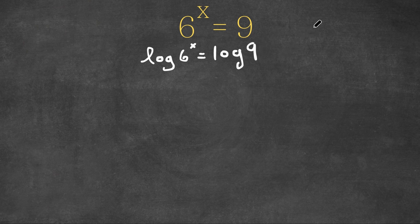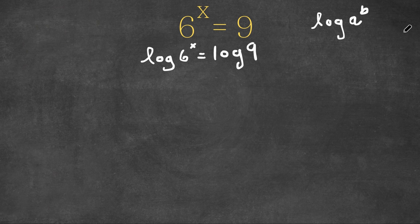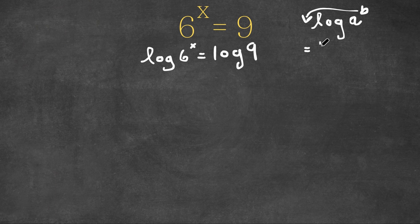Now if we have a logarithm in the form log a to the power of b, an important property of logarithms, also known as the power property, states that we can actually move this exponent to the front of the logarithm. So this would be equal to b times log a.